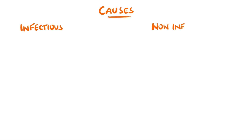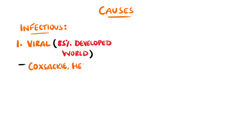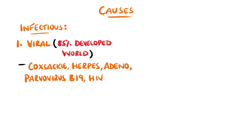Causes of myopericarditis are divided into infectious and non-infectious. Viruses are thought to be responsible in 85% of cases in the developed world, including Coxsackie virus, herpes virus, adenovirus, parvovirus B19, and HIV. COVID-19 has also been thought to cause direct viral injury by binding the angiotensin-converting enzyme 2 receptor.